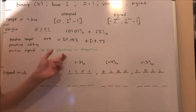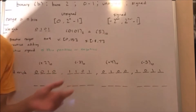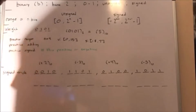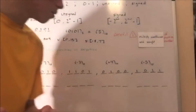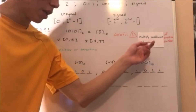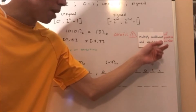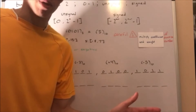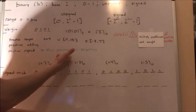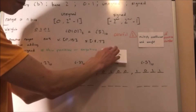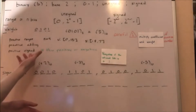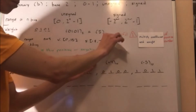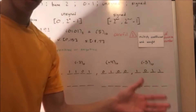Now let's address whether a signed binary number is positive or negative. When you multiply the coefficient and weight, it has to be of a positive number. If it's unsigned, it's always a positive number. If it's signed, you have to determine whether it's positive or negative — it's negative if the leftmost bit is a 1.